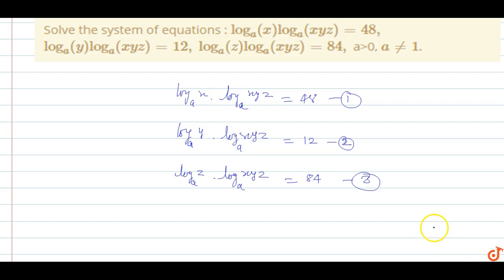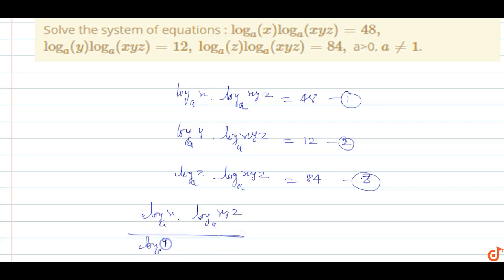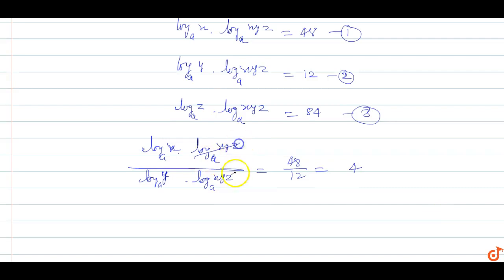Dividing equation 1 by equation 2: log x base a times log xyz base a, divided by log y base a times log xyz base a, equals 48 upon 12 which is 4. The log xyz terms cancel out, giving log x base y equals 4, so x equals y to the power 4.